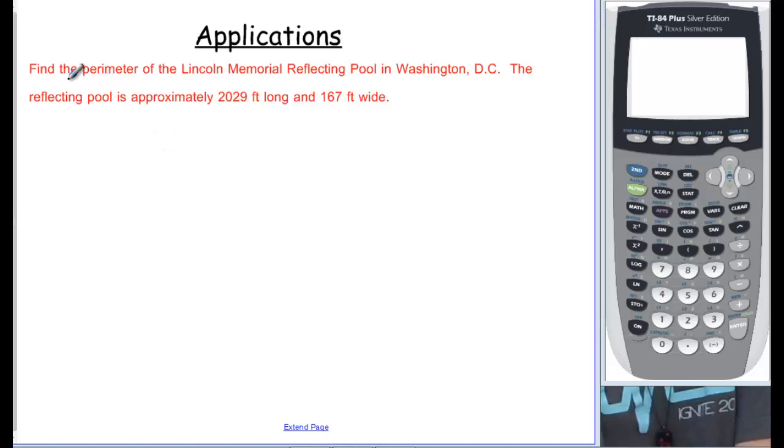Our first example: find the perimeter of the Lincoln Memorial Reflecting Pool in Washington, DC. The reflecting pool is approximately 2,029 feet long and 167 feet wide. One of the first things we need to know here is what are we trying to find? Perimeter. And what is perimeter?